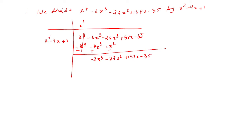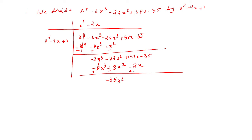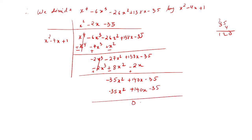Next: what should you multiply x squared by to get minus 2x cubed? Obviously minus 2x. So x squared into minus 2x gives minus 2x cubed, minus 4 into minus 2x becomes plus 8x squared, plus into minus 2x gives minus 2x. Cancelling out: minus 27x squared plus 8x squared gives minus 35x squared, 138x plus 2x gives 140x minus 35. Multiply x squared by minus 35 to get minus 35x squared, minus 4 times minus 35 gives plus 140x, minus 35 into 1 gives minus 35. Cancel those out — therefore x squared minus 2x minus 35 is the factor.